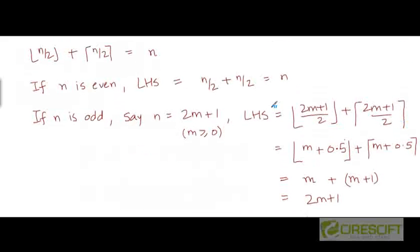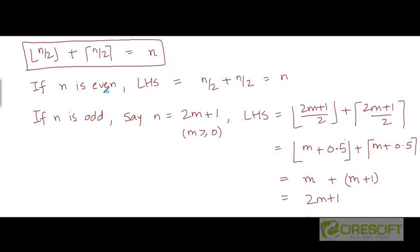Now the floor of n by 2 plus the ceiling of n by 2 is nothing but n. Why is that? We can prove this pretty easily. Let's take two possibilities: either n is even or n is odd. If n is even, then n divided by 2 is a whole number, so whether we take the floor or ceiling of that number, we get that number itself. So the left hand side in that case will be n by 2 plus n by 2, which equals n.